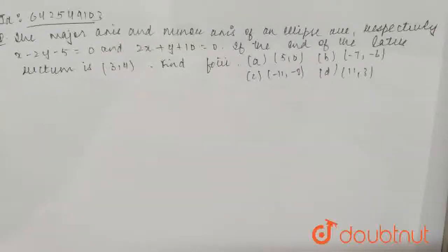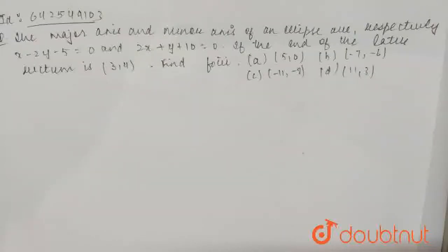Hello everyone, so the question is: the major axis and minor axis of an ellipse are respectively x minus 2y minus 5 equals 0, and 2x plus y plus 10 equals 0. Now, if the end of the latus rectum is 3 by 4, then we have to find the foci. Let's start.